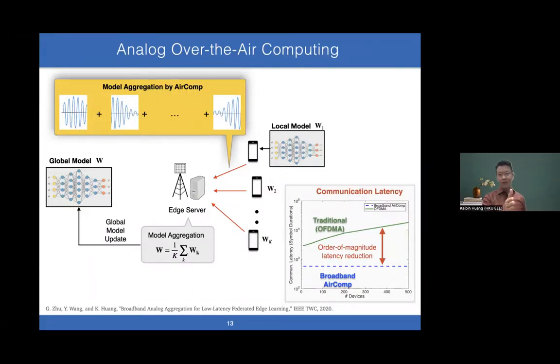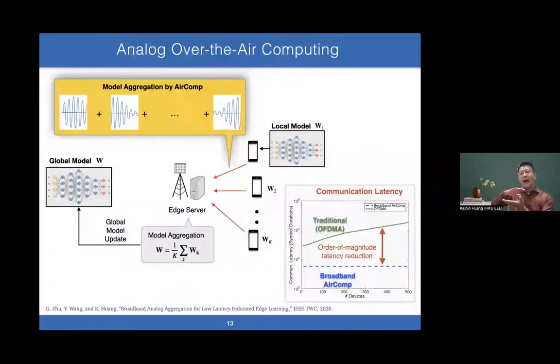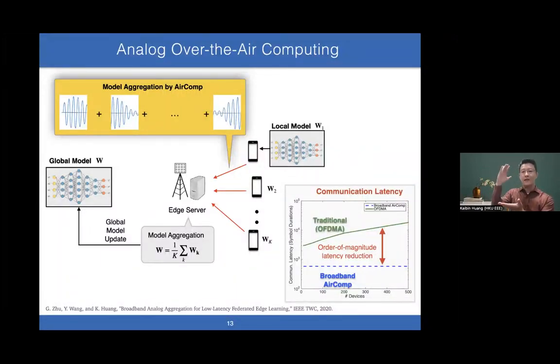The local models aren't very accurate. So the server does model aggregation to get a more accurate global model. The aggregation function sums up the local models and divides by the number of devices. This is a multi-access problem with uplink transmissions of high-dimensional models. What researchers, including my group, have proposed is that each device transmits the model using uncoded analog modulations, like what Martin Cooper did. Why? Because the waveform superposition property of the multi-access channel can automatically perform model aggregations. The server automatically receives the aggregated version—and this is what it wants.